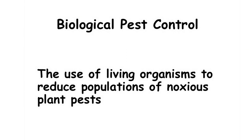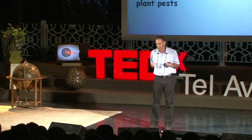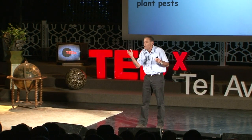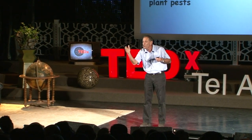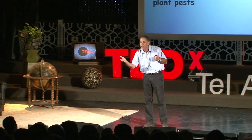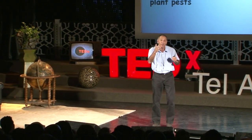Within plant protection, I came into the discipline of biological pest control, which we actually define as the use of living organisms to reduce populations of noxious plant pests. So it's a whole discipline in plant protection aiming at reduction of chemicals. These good bugs have existed in the world for thousands and thousands of years, but only in the last 120 years have people known more and more how to exploit this biological control phenomenon — or in fact, natural control phenomenon — to their own needs.